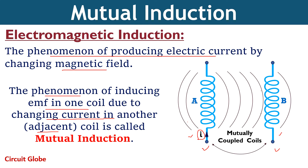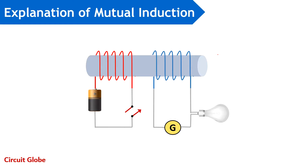When current flows through a coil, magnetic field gets generated, and as clearly shown here, the field lines of coil A are passing through coil B. When the current flowing through the primary coil changes, the magnetic field lines also change, and resultantly the magnetic flux linkage shows variation. This leads to inducing EMF in the secondary coil, due to which induced current begins to flow through the secondary coil as well. Now let us understand mutual induction using the circuit representation shown here, where we have two coils — one forms a circuit connection with the battery and the switch, while the other forms a connection with the bulb.